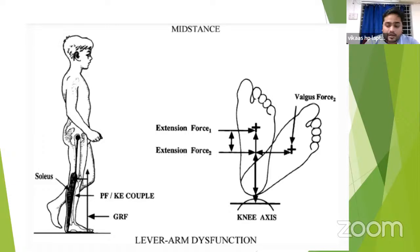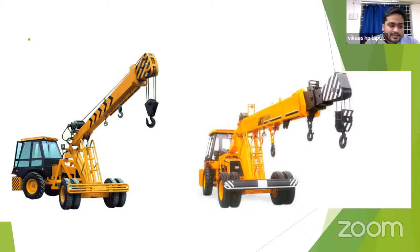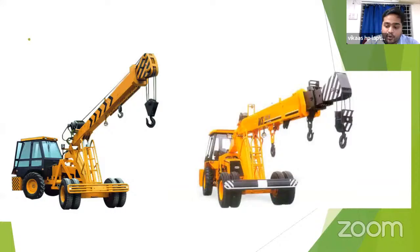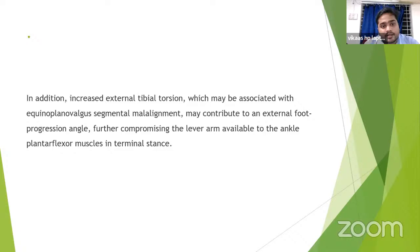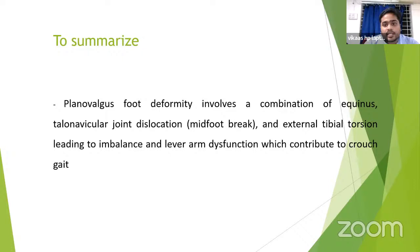An analogy is offered: two cranes - the one on the left represents a planovalgus foot while the one on the right is a normal foot. Physics shows the crane on the right will lift more load, with the wheels representing the foot and the pulling system representing the soleus. Additionally, increased external tibial torsion compromises the lever arm available to the ankle plantar flexors in terminal stance, contributing to crouch gait.